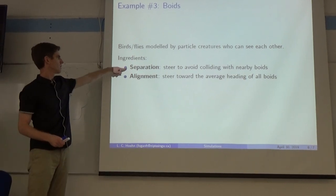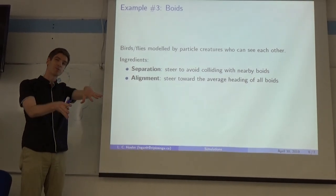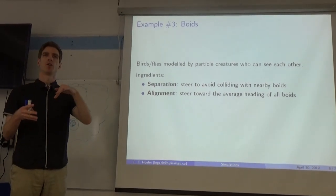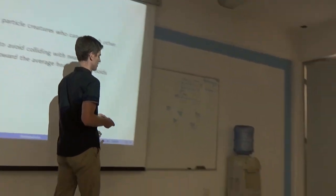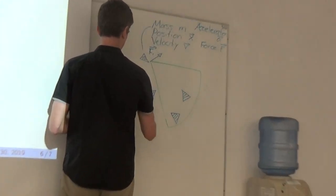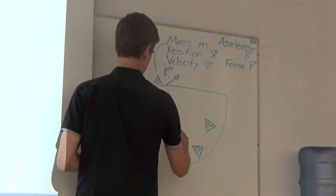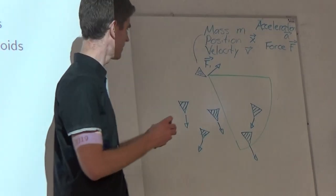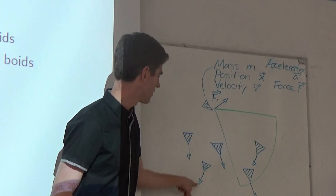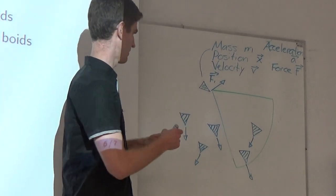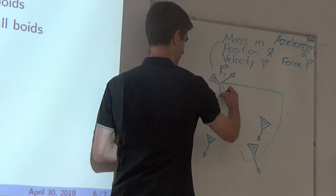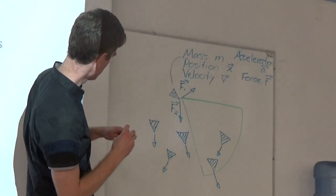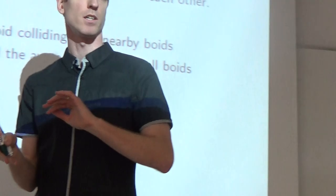But second thing, even at the same time as trying to avoid the birds right in front of him, that bird is going to steer towards the average direction of all the other birds. So he looks at all of these birds, and looks at their velocities. He takes the average of all of those velocities, and steers towards that. So the average velocity of all the other birds.